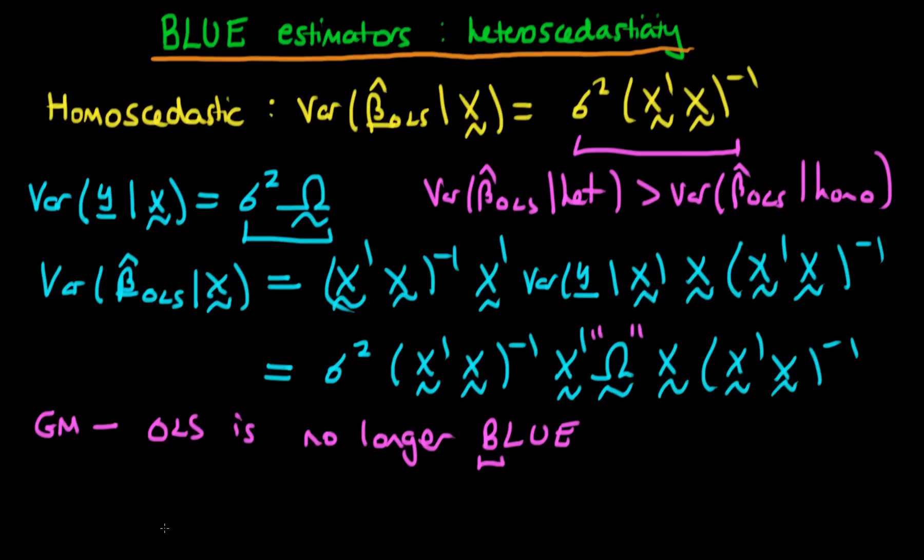Essentially what we're going to do is perform a linear transformation on our model and then estimate OLS on that transformed model. That transformed model should have homoscedastic errors.